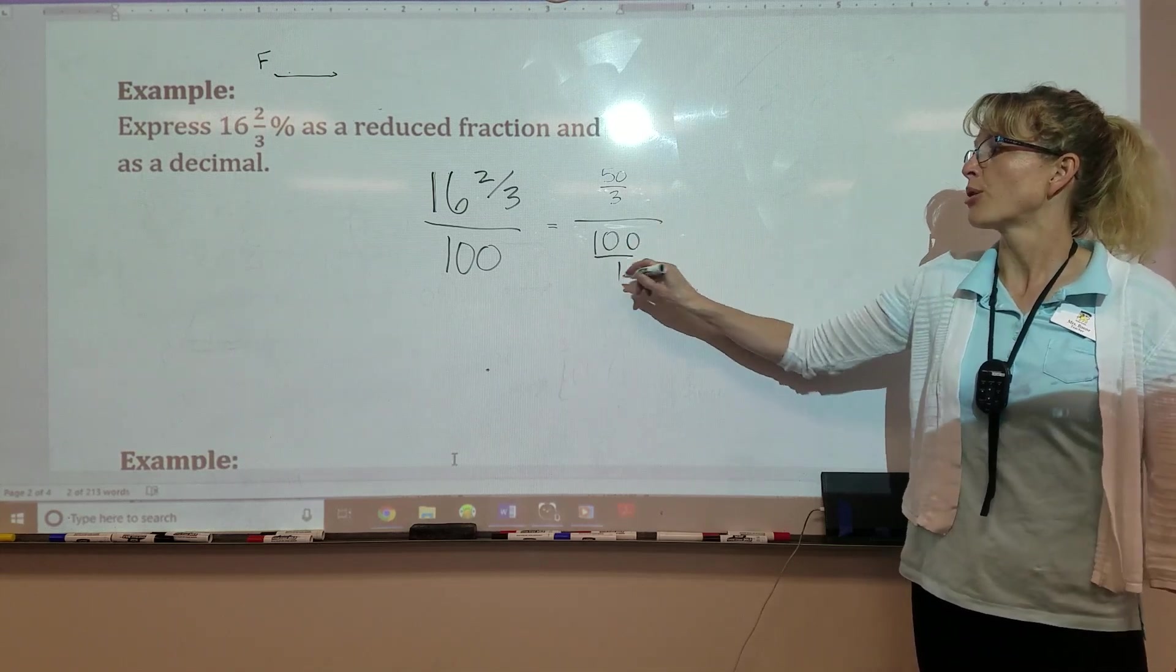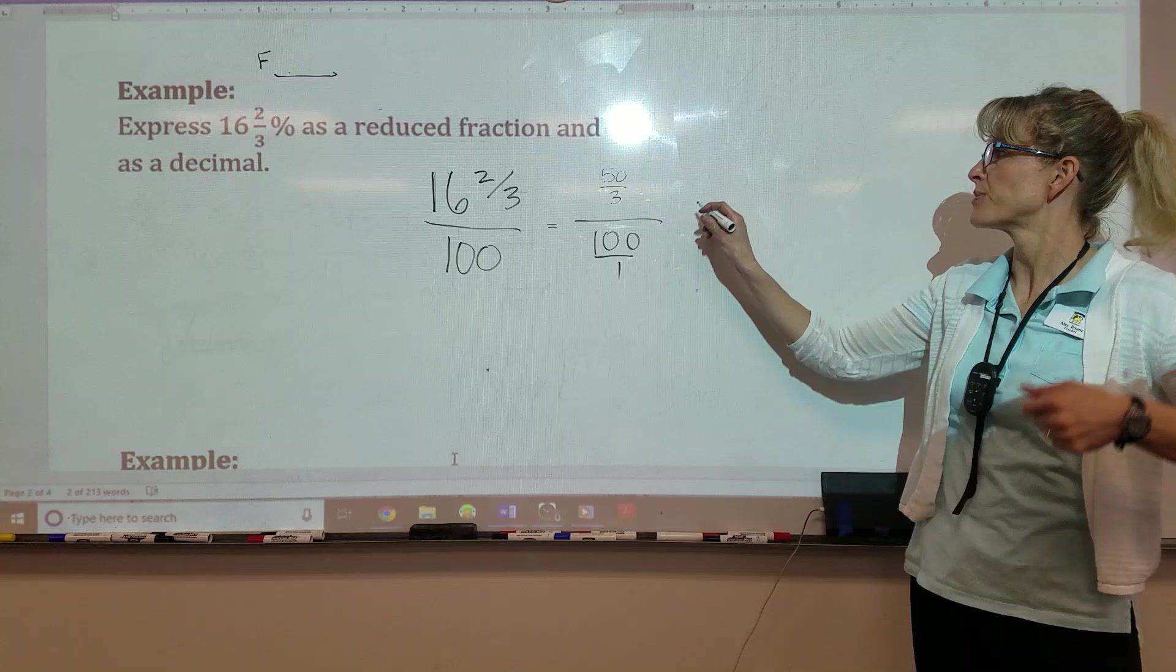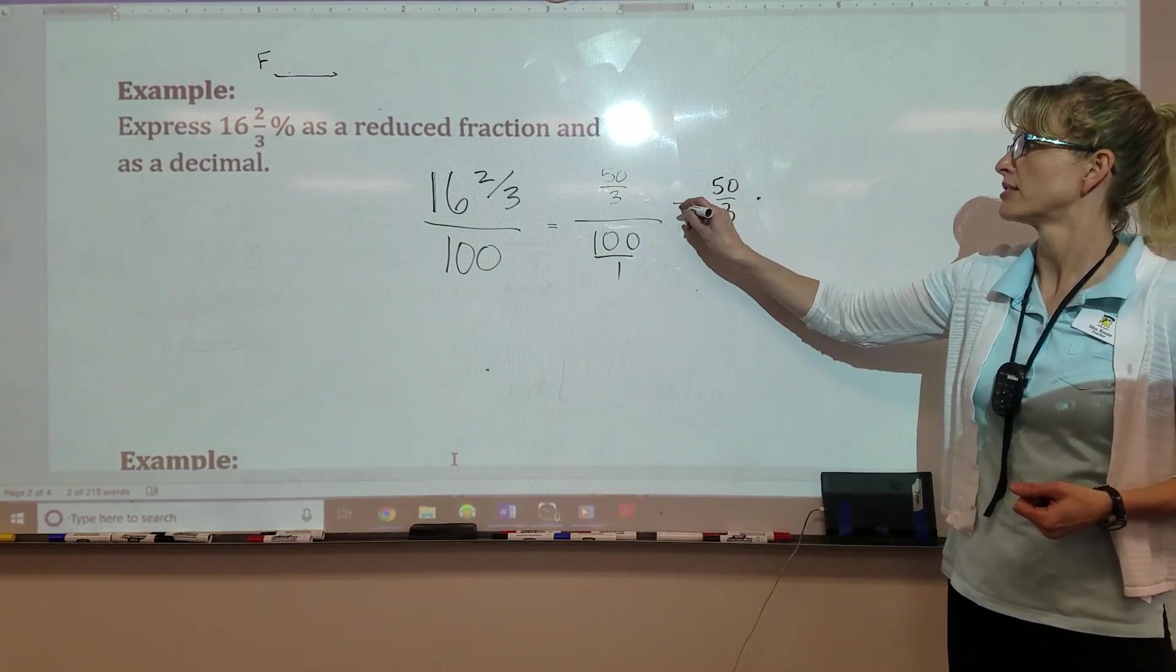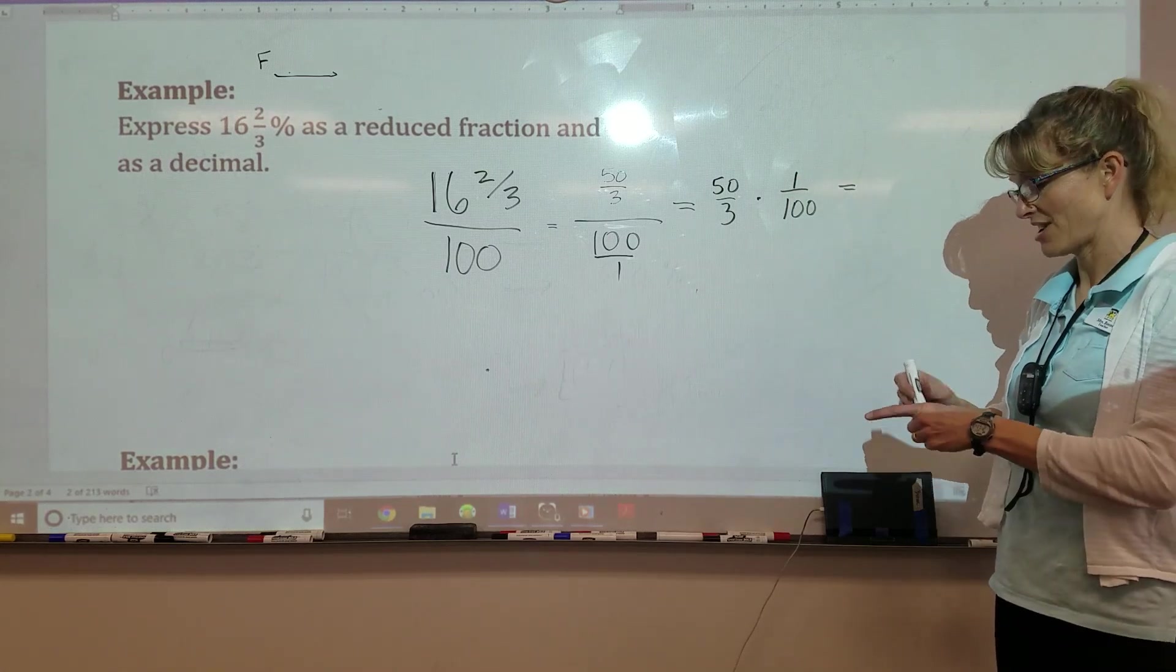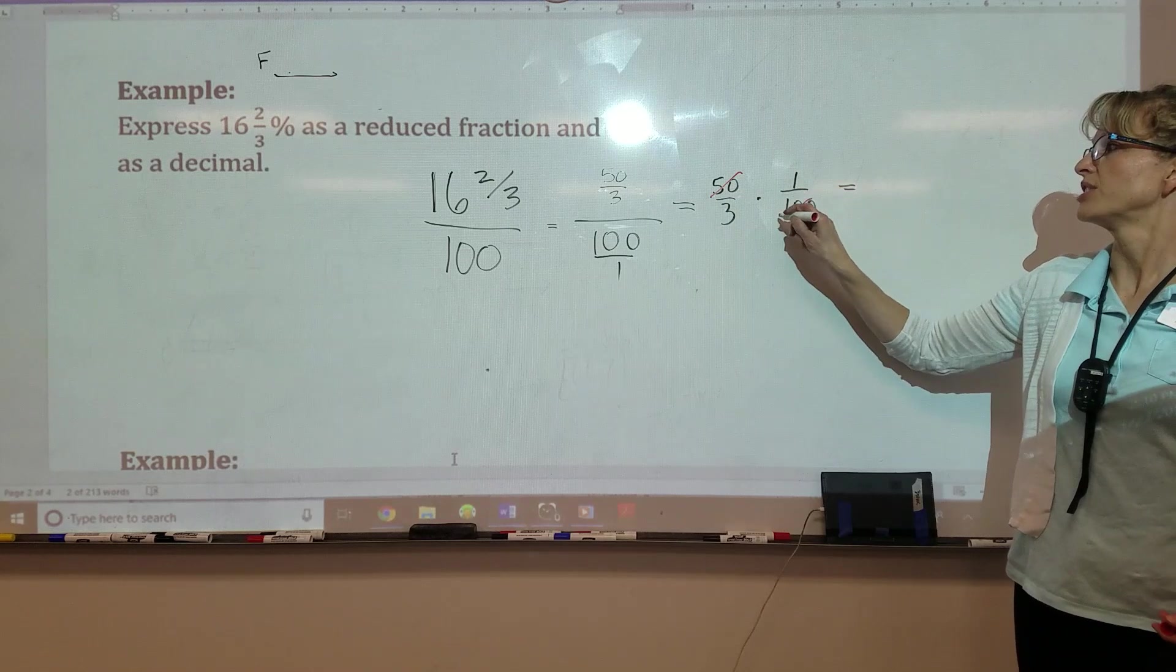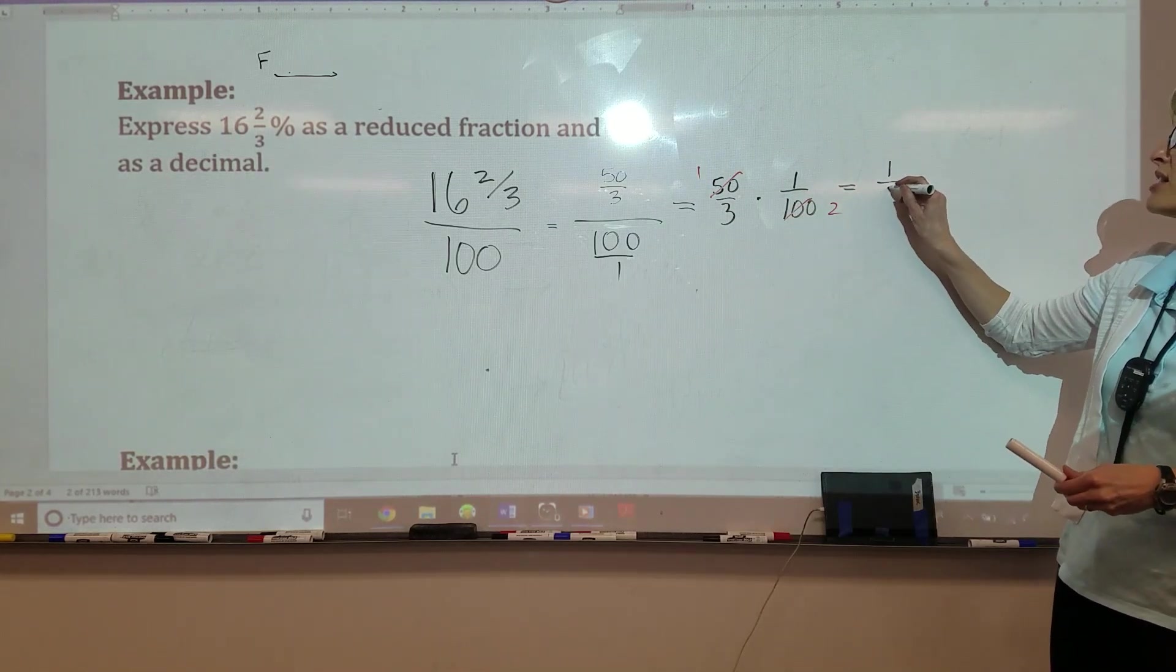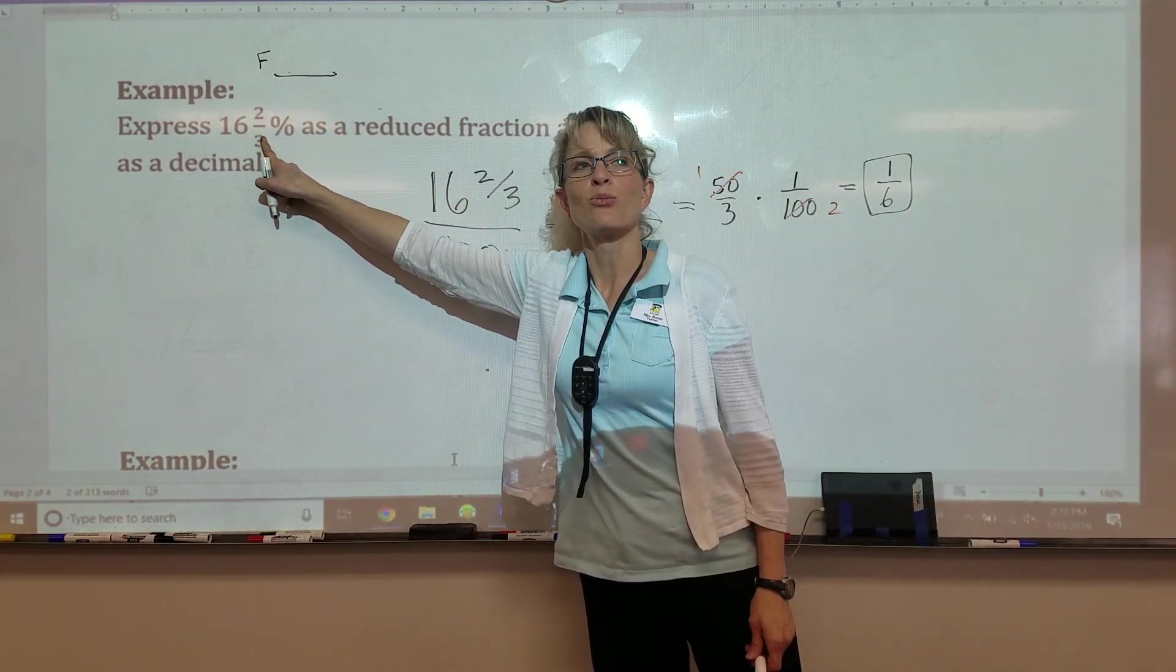They have a fraction divided by a whole number. Turn them both into a fraction. Now we can copy, dot, flip. So copy the top, change the division to a dot, and then flip the denominator. That makes it really nice to calculate.